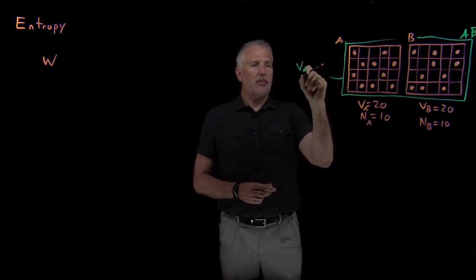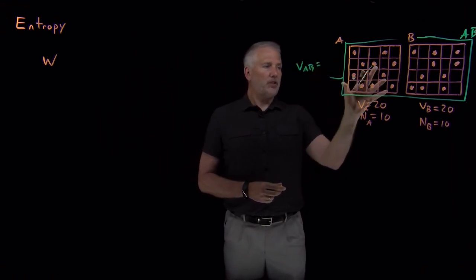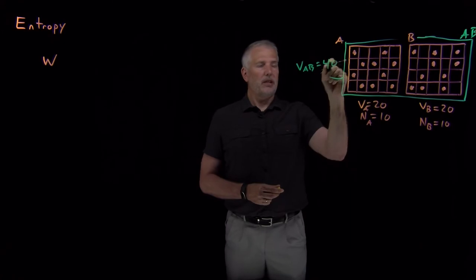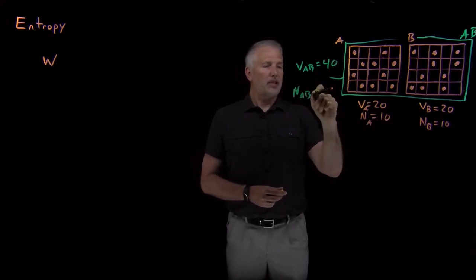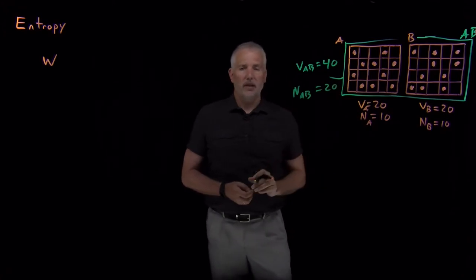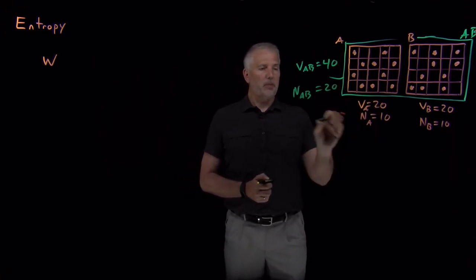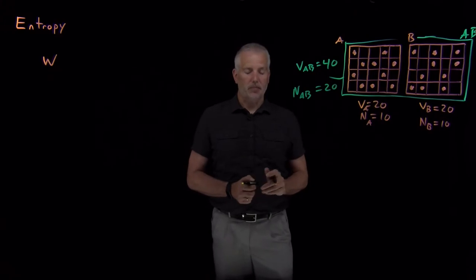the volume of that combined system is just 20 plus 20 is 40. The number of molecules in the combined system is 10 plus 10, 20. Those are both extensive properties. The volume and the number of molecules are both extensive properties.